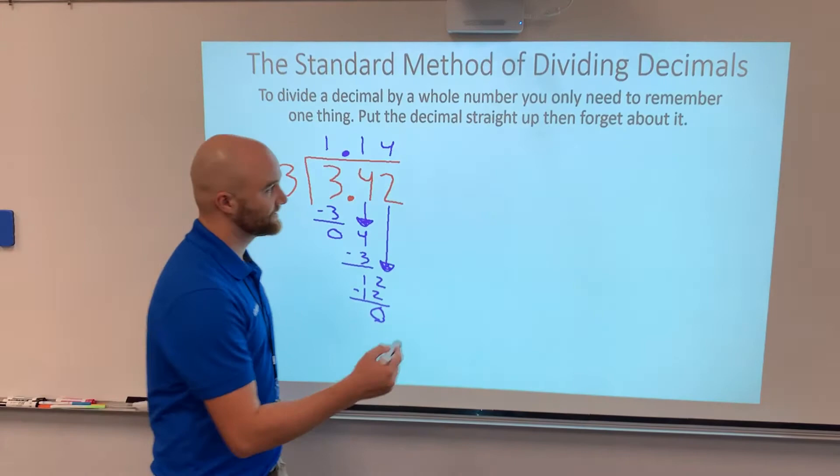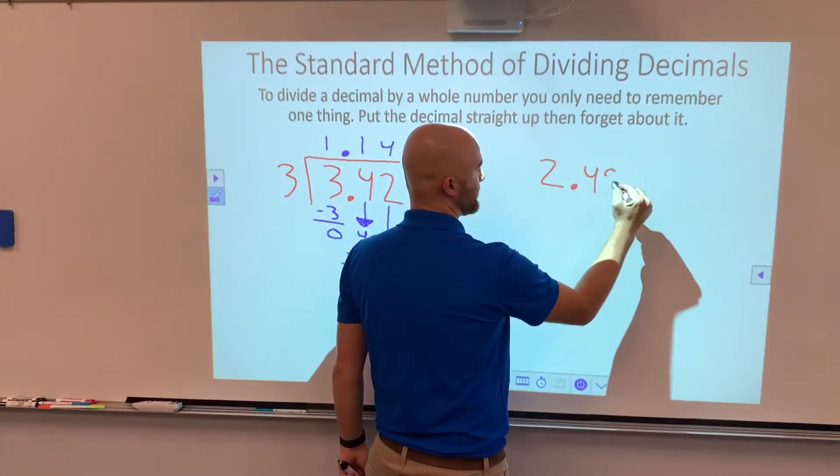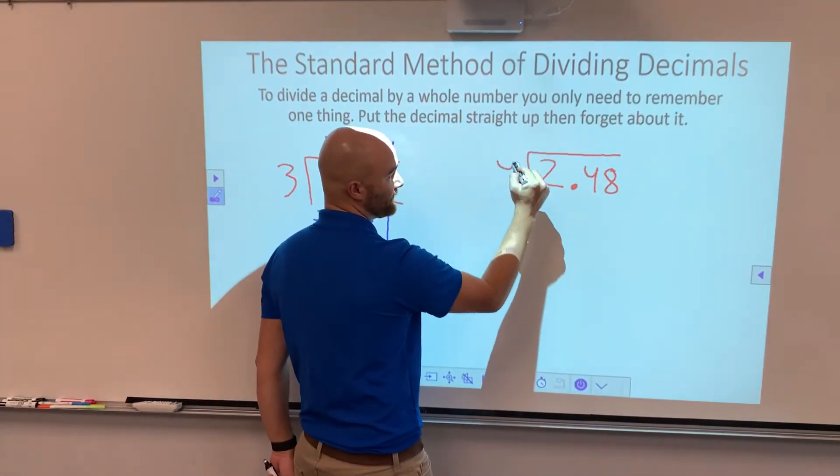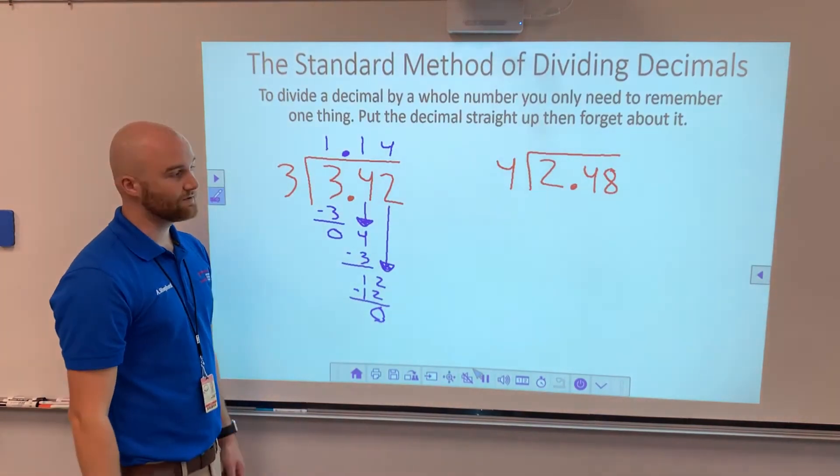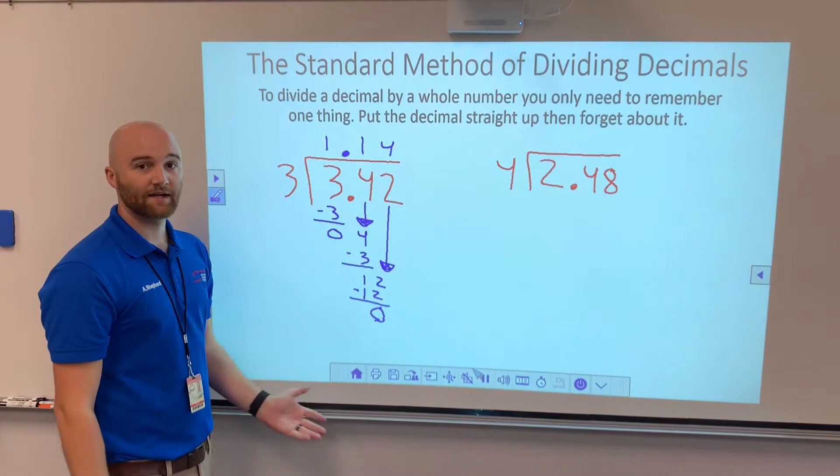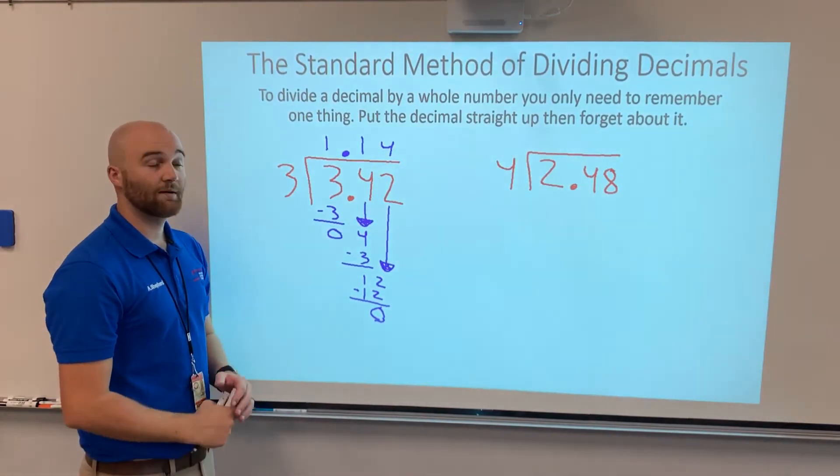Let's see another example. So I've got 2.48 divided by 4. Go ahead and pause the video and try it yourself. Put the decimal straight up, then divide it like normal, making sure you keep everything nicely lined up. Come back when you're done.